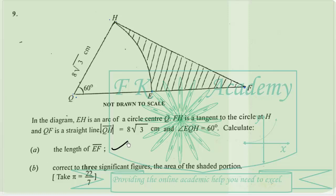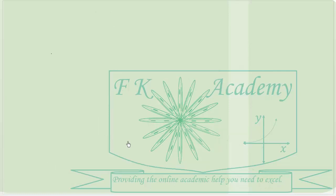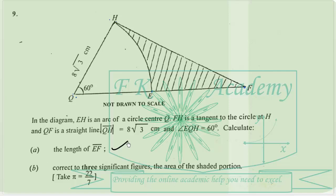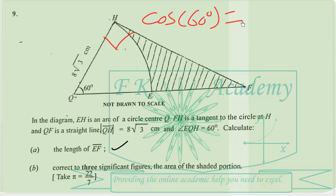So let's tackle this part. To find the length of line segment EF, we can use trigonometry, because the tangent FH and the radius QH will meet at a 90 degree angle. Using the cosine ratio: cos 60 degrees equals the adjacent side, which is 8 root 3, over the hypotenuse, which is QF. And QF is made up of QE, which is also 8 root 3, because the radii are equal in length.